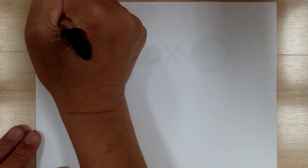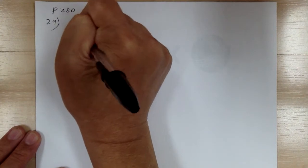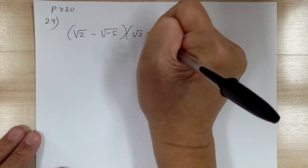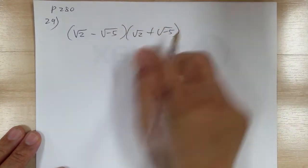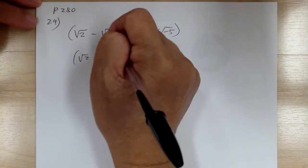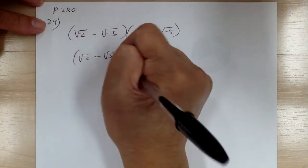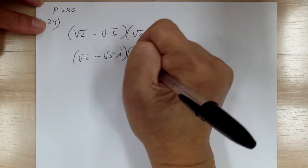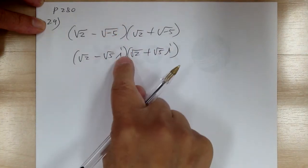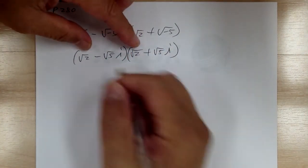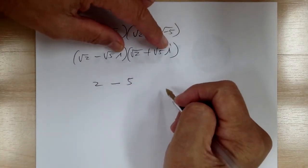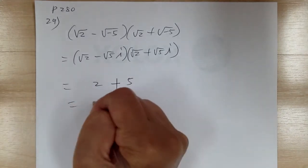Number 29: (square root of 2 minus square root of negative 5) times (square root of 2 plus square root of negative 5). Again, these are conjugates. Before you do the conjugate, take care of the i inside the square root and make sure i is on the outside. Then multiply: 2 minus 5, and i times i is negative 1, so it becomes plus 5. This equals 7.